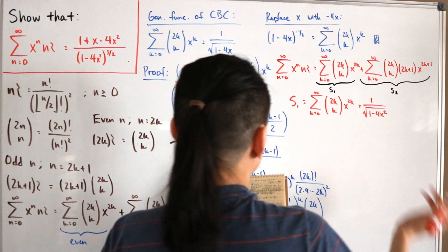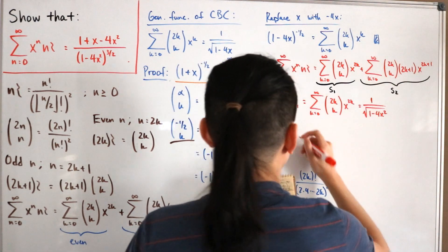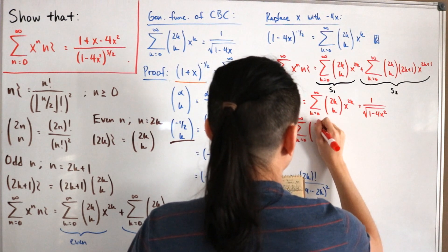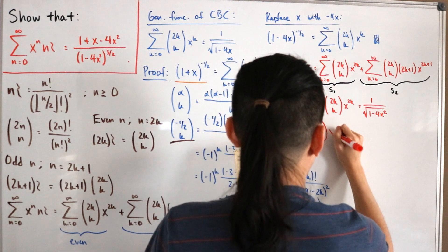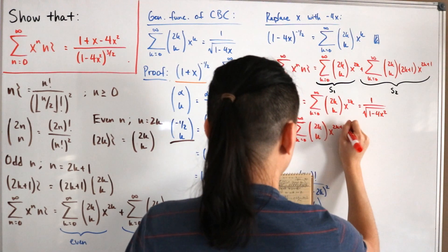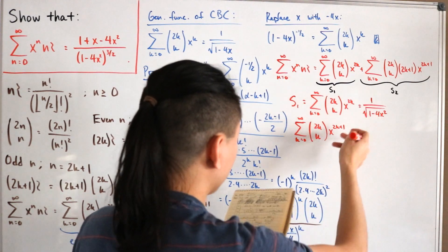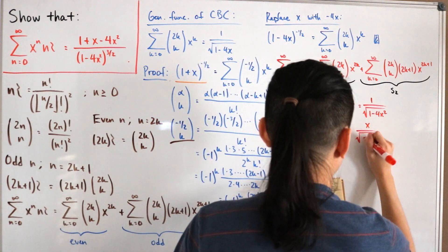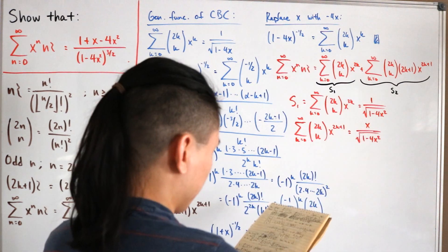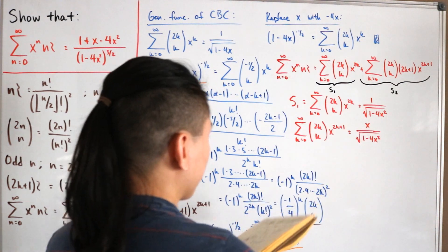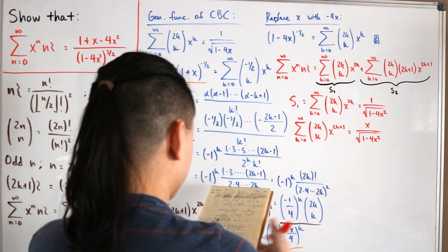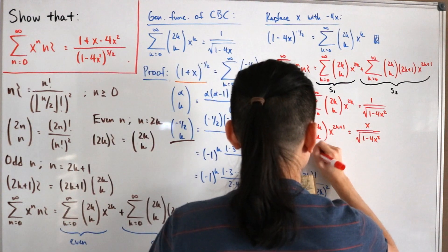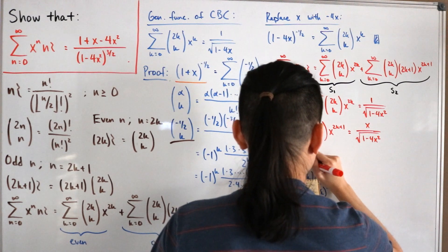For S2, we take a step back and consider Σ_{k=0}^∞ C(2k,k) · x^(2k+1), which is just x · S1 = x / √(1 - 4x²). To get S2, which has a factor of (2k+1), we differentiate both sides with respect to x.